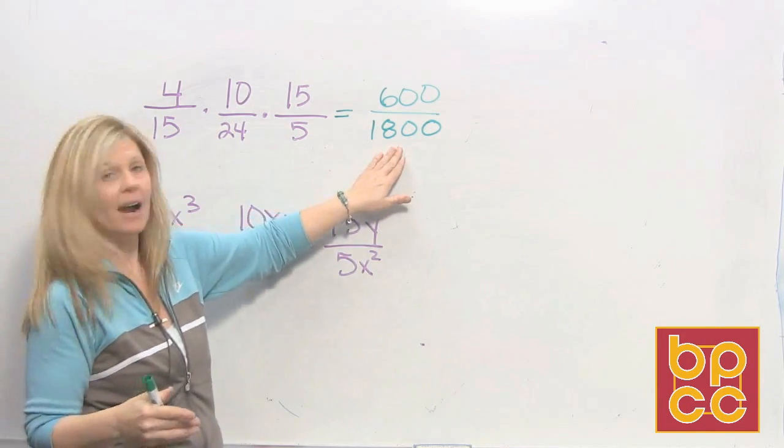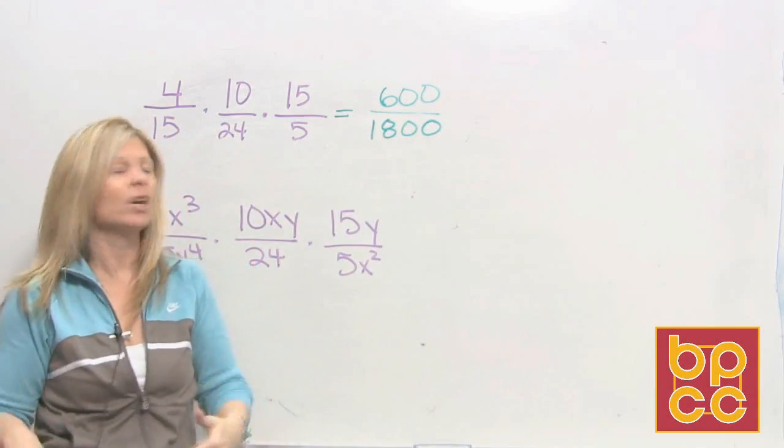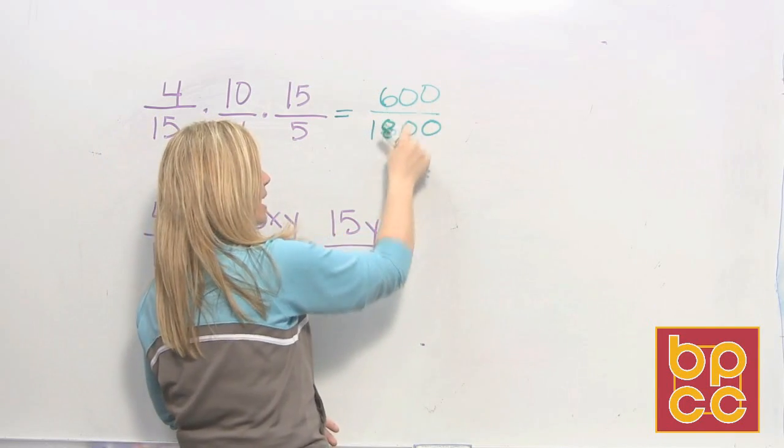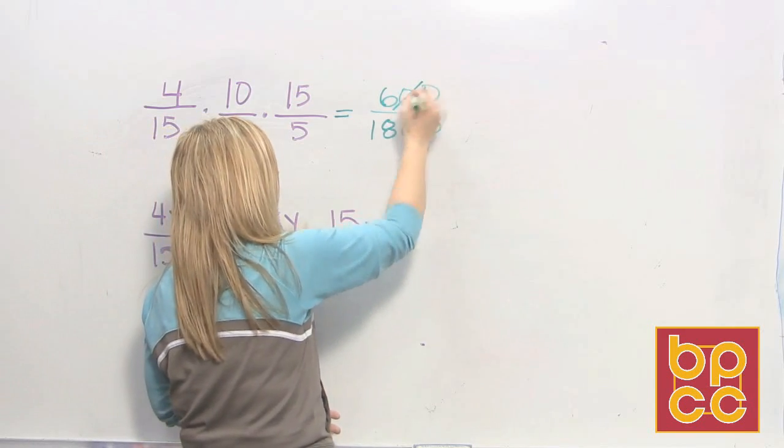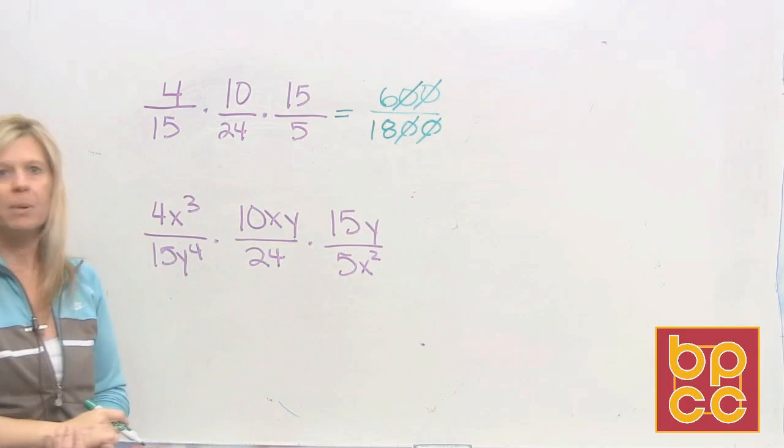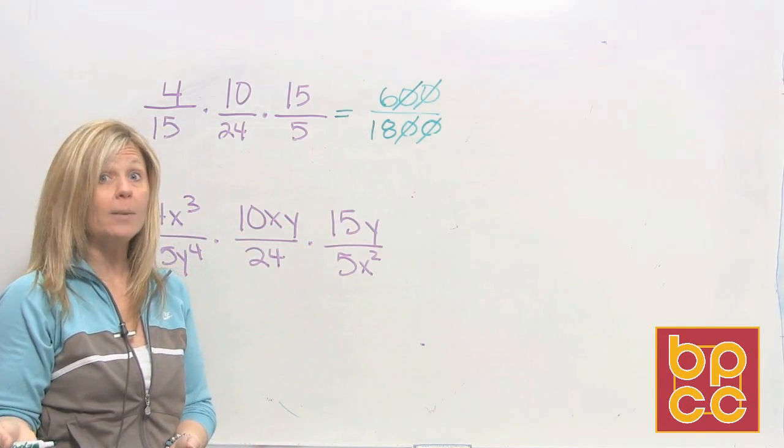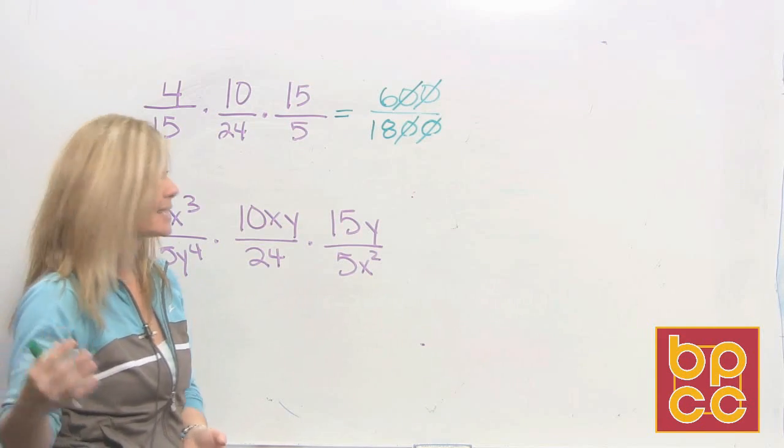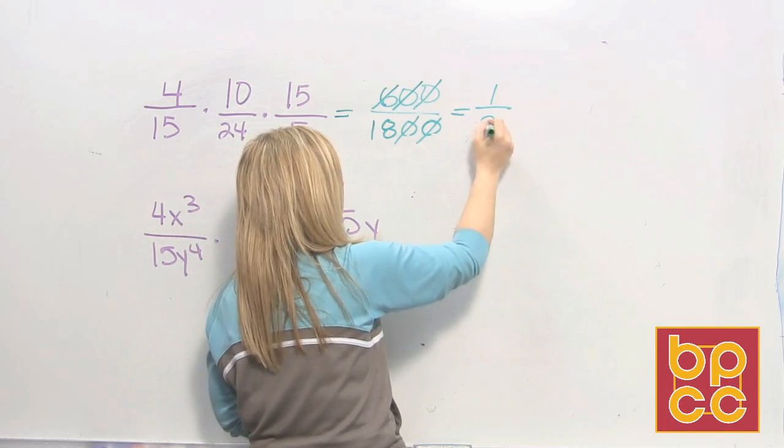Now can this be the final answer? No! Because we know with fractions that bar means to do division. So we get to divide 600 by 1800. Well we all know in arithmetic if a number ends in two zeros we can divide it by 100. So 600 divided by 100 is 6. 1800 divided by 100 is 18. But that's still not in lowest terms. 6 and 18 can both be divided by 6. So 6 divided by 6 is 1, 18 divided by 6 is 3.